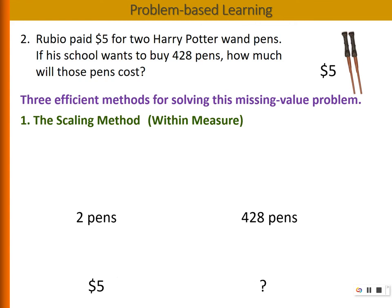So the second method is called the unit rate method, or sometimes we call it the across measure. This time we are relating the quantities vertically. We are relating two pens with $5. How are they related?